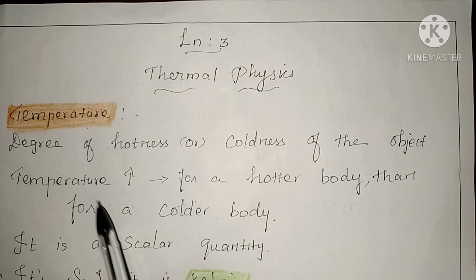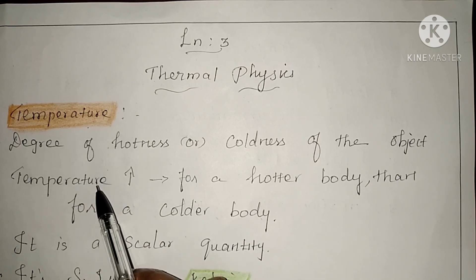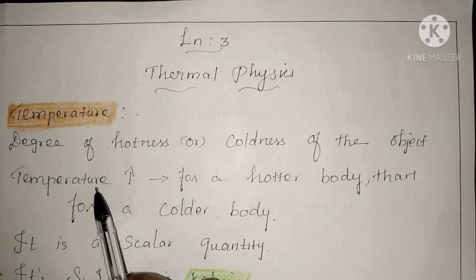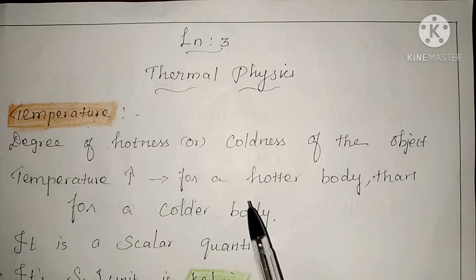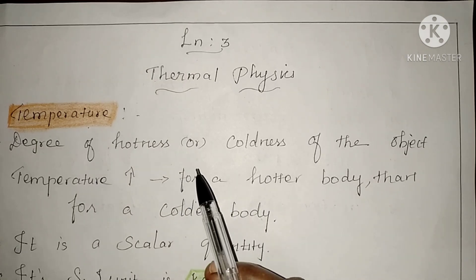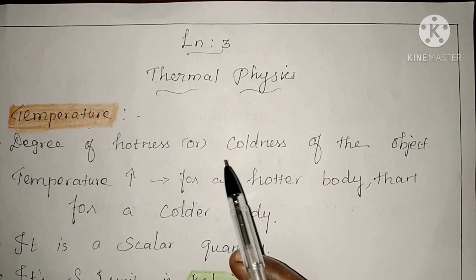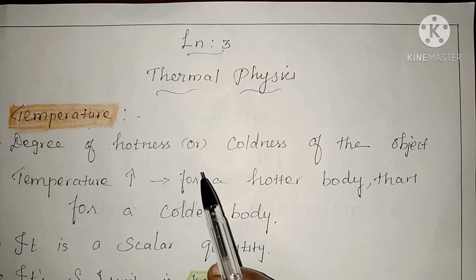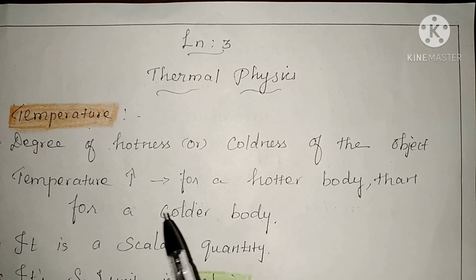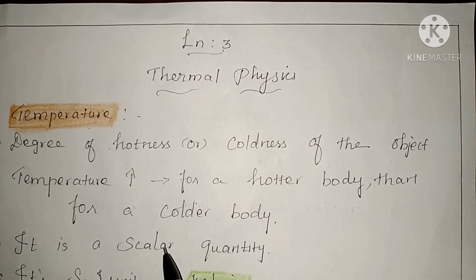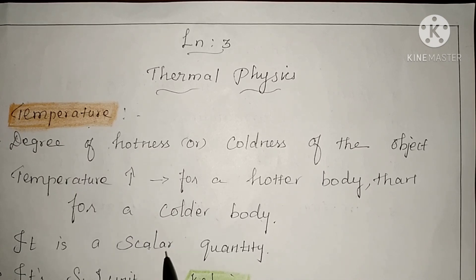Temperature is a scalar quantity. It only defines how much hotness or coldness there is — it can be measured with degree Celsius, Fahrenheit, or Kelvin. It only gives a magnitude, such as 20 Kelvin or 30 degree Celsius. Because it only has magnitude and no direction, temperature is a scalar quantity.